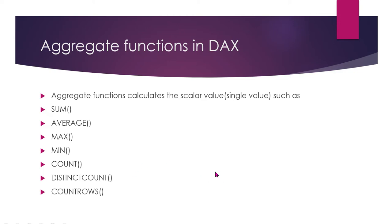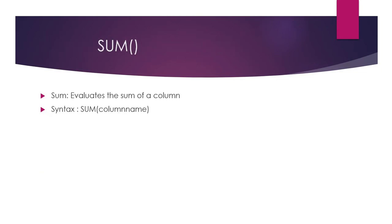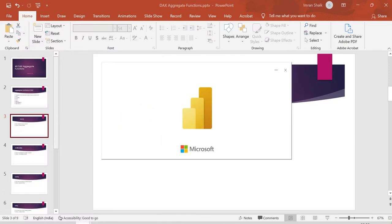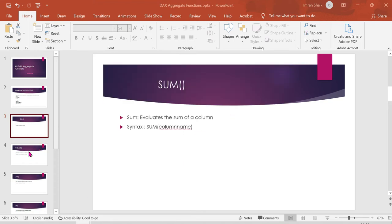First, we will look at the SUM function. SUM adds up the values in a column. For example, if there are 10 rows with student marks, the SUM function returns the total of that column. The syntax is SUM of column name.